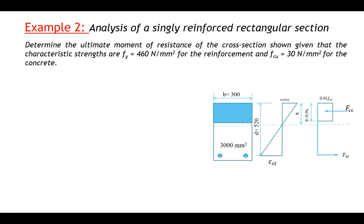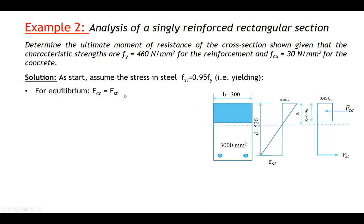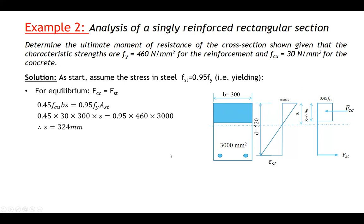Let's take another example with a small difference. The cross-section is the same but we have more steel reinforcement — the area of steel in this case is 3000 mm². The rest is the same. Step one: assume the tension steel is yielding and make equilibrium between compression and tension. We get S = 324 mm and X = S / 0.9 = 360 mm. Because we increased the area of steel, X is larger compared to example one.